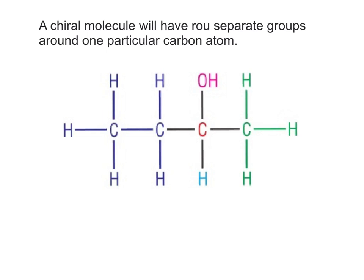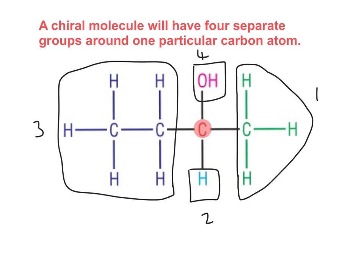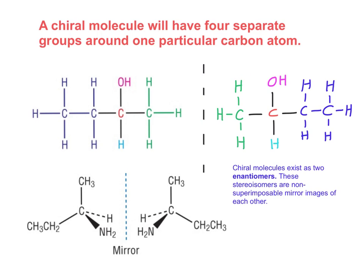So a chiral molecule will have four separate groups around one particular carbon atom. If we take the highlighted carbon, you can see that there's four separate groups around that carbon. So it's easy to see that this is a chiral molecule. The important thing is that chiral molecules exist as two enantiomers. Each enantiomer will rotate plane polarised light in the opposite direction to the other. These are stereoisomers and they're non-superimposable mirror images of each other.